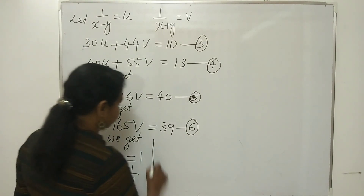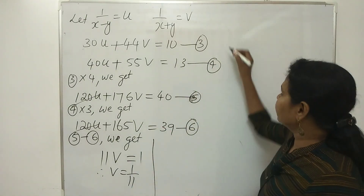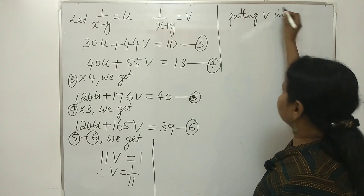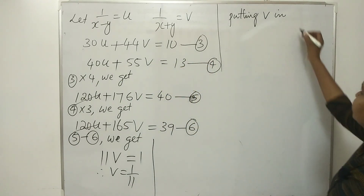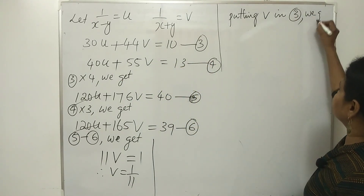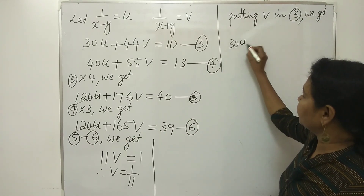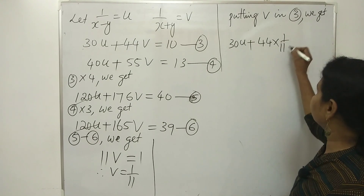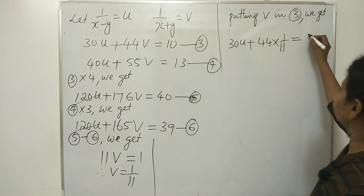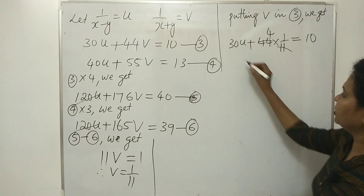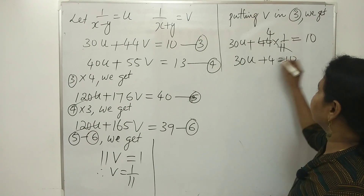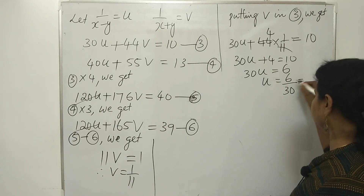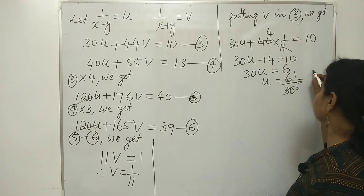Therefore v equals 1/11. Now substituting the value of v into equation 3: 30u plus 44 multiplied by 1/11 equals 10. That gives 30u plus 4 equals 10, so 30u equals 6, therefore u equals 6/30, which equals 1/5.